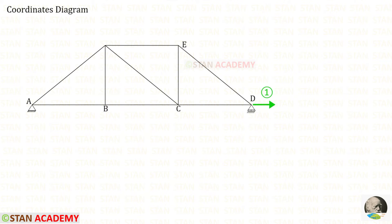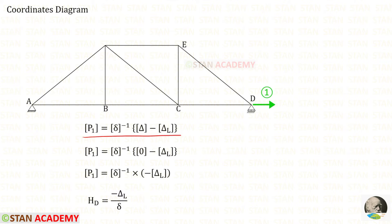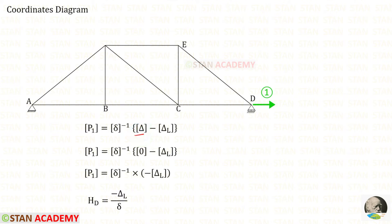Let us assume that HD is acting towards the right side. If we get a negative value, then we can change the direction. This is the formula we are going to use to find HD. In this analysis there is only 1 coordinate, so inside all of these 4 matrices there will be only 1 member. Delta is the deflection due to temperature change or reduction or extension of members. Nothing is mentioned about these, so we assume delta will be 0.